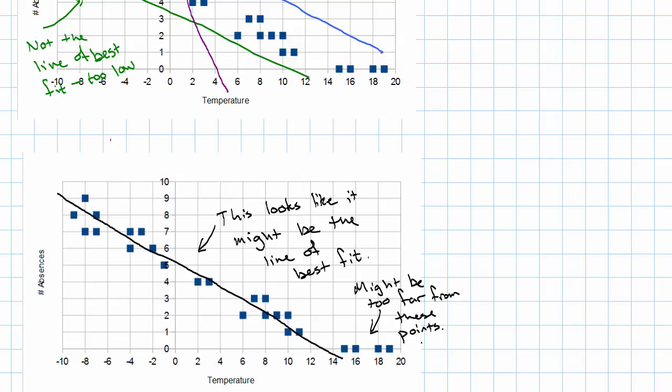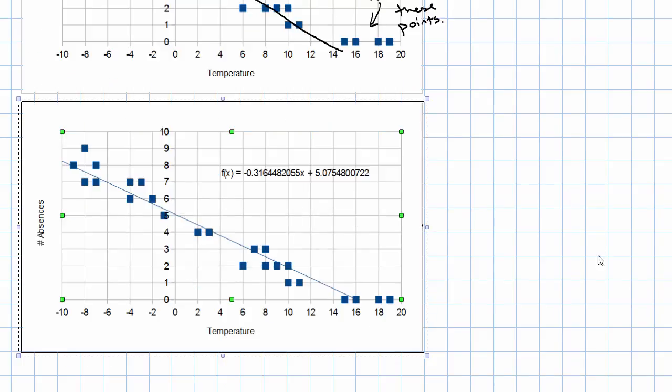If we want to, we can have a computer draw the line of best fit as well. According to the computer, this is the actual line of best fit. And the computer will even tell us the equation.